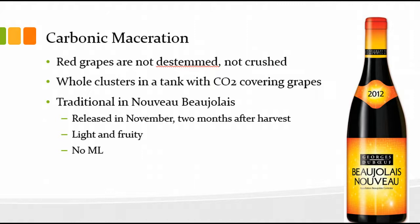Let's move on to carbonic maceration, an alternative to traditional fermentation. This technique is used in things like Nouveau Beaujolais, which is released in November — just two months after harvest — processed very quickly, bottled, and released in time for Thanksgiving. It's fermented by carbonic maceration, which gives a very light and fruity character. There's no malolactic fermentation, partly because there's no time, and retaining that higher acidity works well. It often tastes a little bubblegummy, with a banana character from fermentation esters produced by yeast.